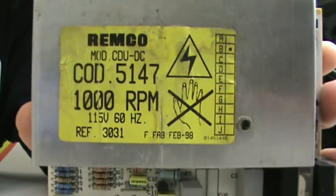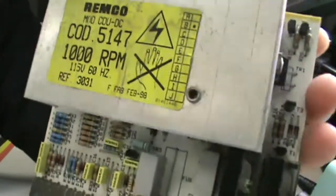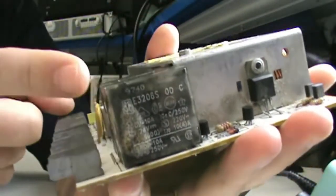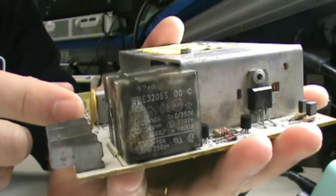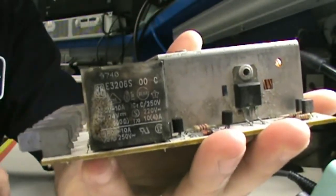So here is your Remco control board and what we're going to look at here are these relays. There's two relays here, they're 24 volt PC mount type and you can see this one here is one in a thermal meltdown.